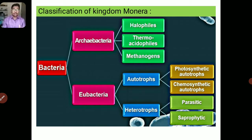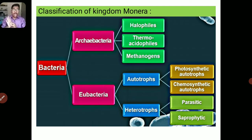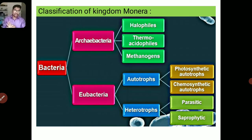Classification of Kingdom Monera: the sole members are bacteria. Kingdom Monera is classified into Archaebacteria and Eubacteria. Archaebacteria is further classified into Halophiles, Thermoacidophiles, and Methanogens. Eubacteria is classified into Autotrophs and Heterotrophs. Autotrophs prepare their own food; they are further classified into Photosynthetic Autotrophs and Chemosynthetic Autotrophs. Heterotrophs depend on other organisms; they are further classified into Parasitic and Saprophytic.